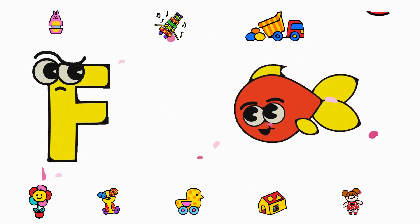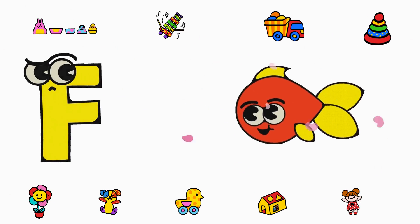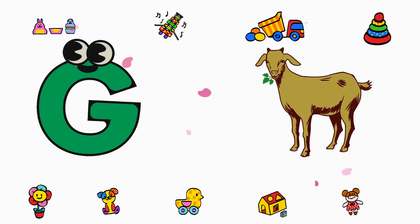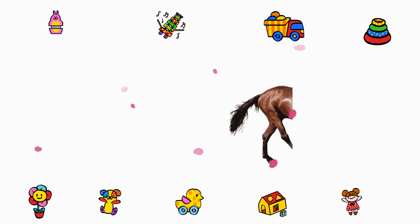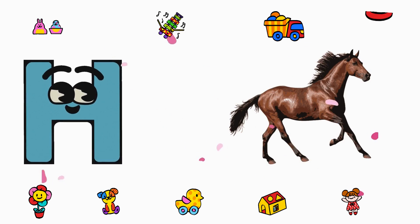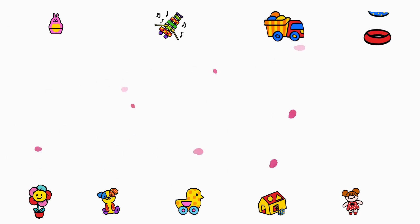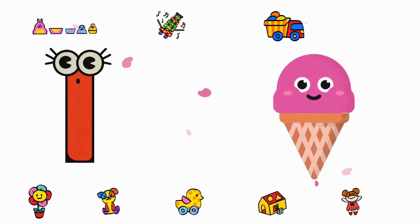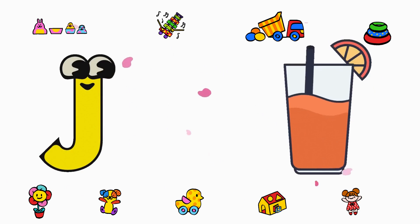F is for Fish. G is for Goat. H is for Horse. I is for Ice Cream. J is for Juice.